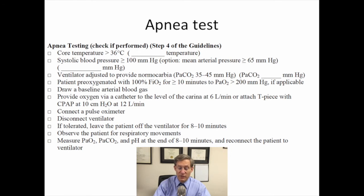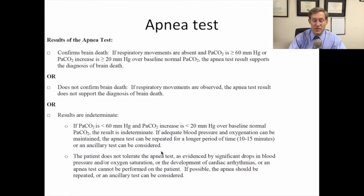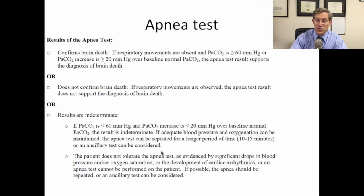The patient is pre-oxygenated with an FiO2 of 100% on the ventilator for greater than or equal to ten minutes to get the pO2 greater than 200 millimeters of mercury. A baseline arterial blood gas is performed, and a nasal cannula is placed down the endotracheal tube. The patient should already have a pulse oximeter attached, then is disconnected from the ventilator and observed carefully for eight to ten minutes. Another arterial blood gas is checked at the end of that time, and the patient is reconnected to the ventilator. The apnea test confirms brain death if respiratory movements are absent and the pCO2 is greater than or equal to 60 millimeters of mercury, or the pCO2 increases by greater than or equal to 20 millimeters of mercury over baseline in patients with chronic hypercapnia.